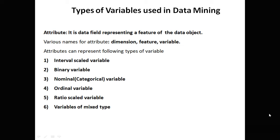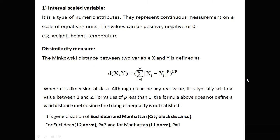Types of variables used in data mining. An attribute is a data field representing a feature of a data object. Various names for attributes include dimension, feature, and variable. Attributes can represent the following types: interval scale, binary, nominal or categorical, ordinal, ratio scale, and mixed type. Part 1 covers up to ordinal variables, and part 2 covers ratio scale, mixed type, and other similarity measures.